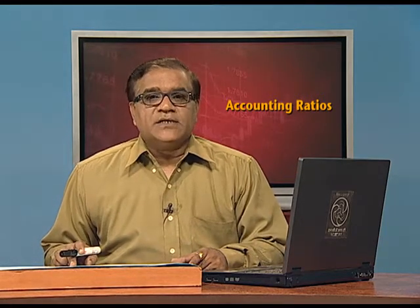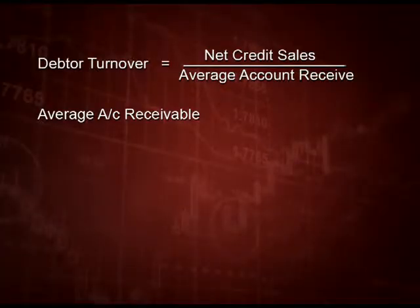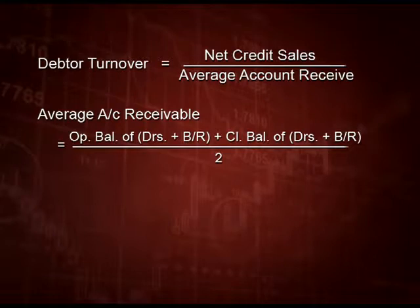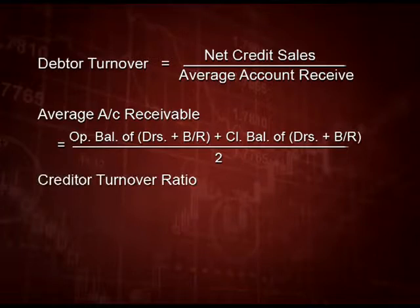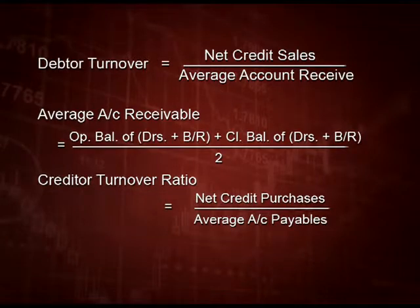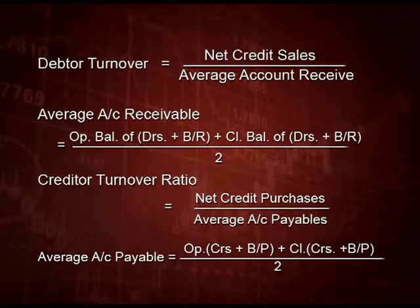The debtor turnover ratio is equal to net credit sales upon average accounts receivable, where average accounts receivable means opening balance of both debtors and bills receivable plus closing balance of both debtors and bills receivable, divided by 2. The next ratio is credit turnover ratio, with the formula net credit purchases upon average accounts payable. Average accounts payable is opening creditors plus bills payable plus closing creditors plus bills payable divided by 2.